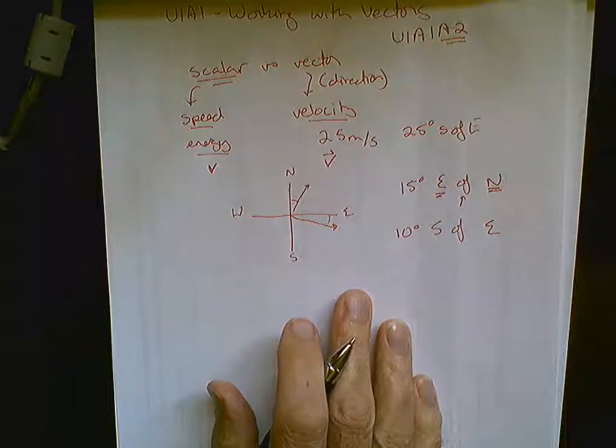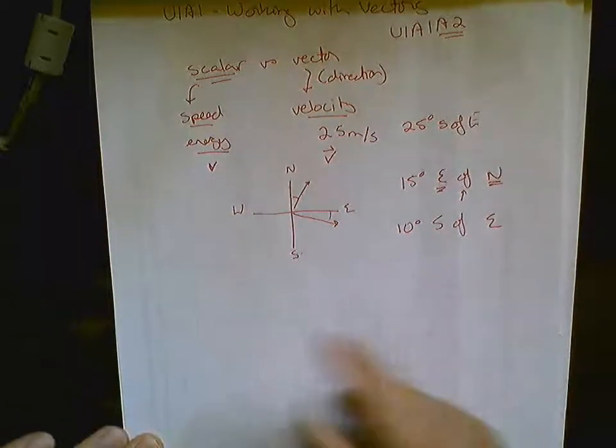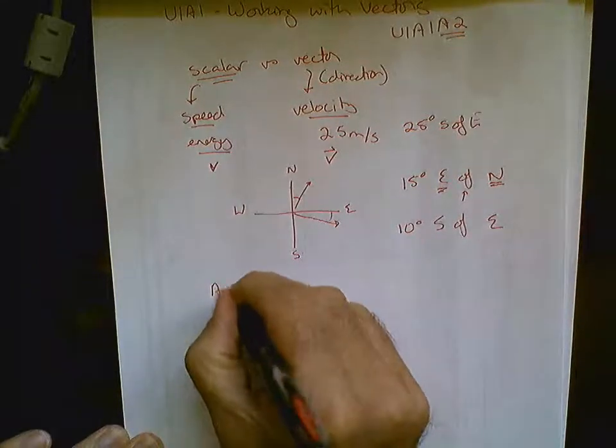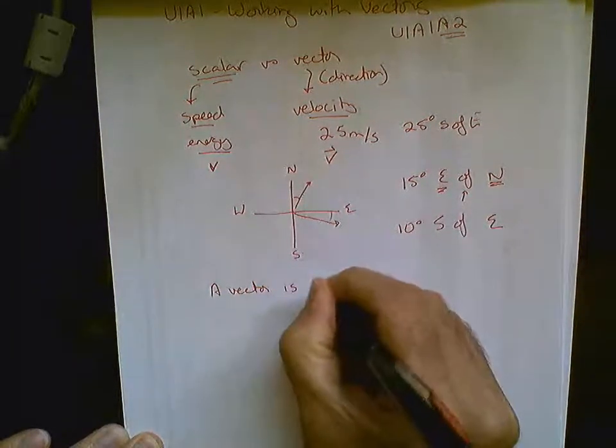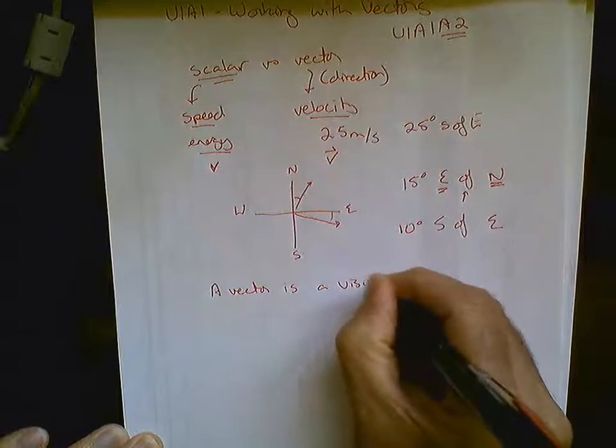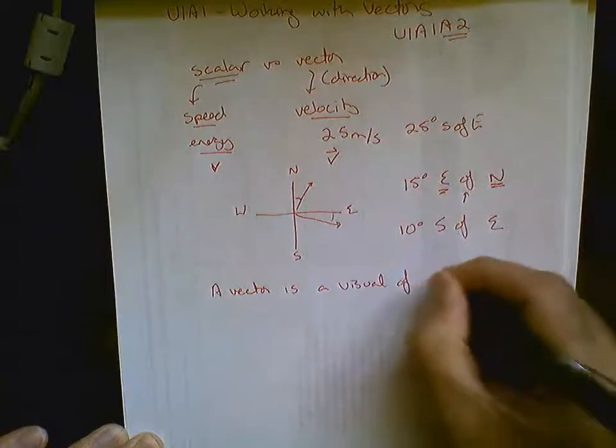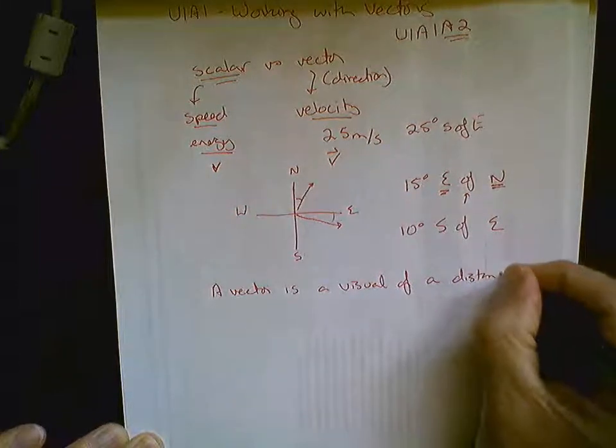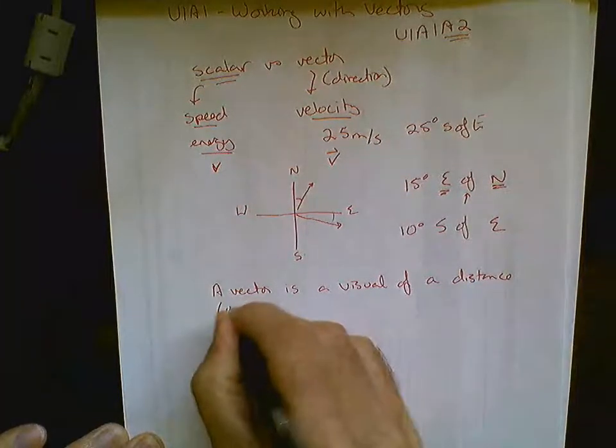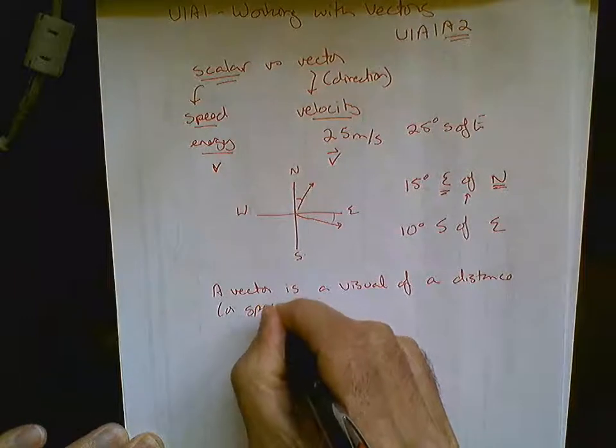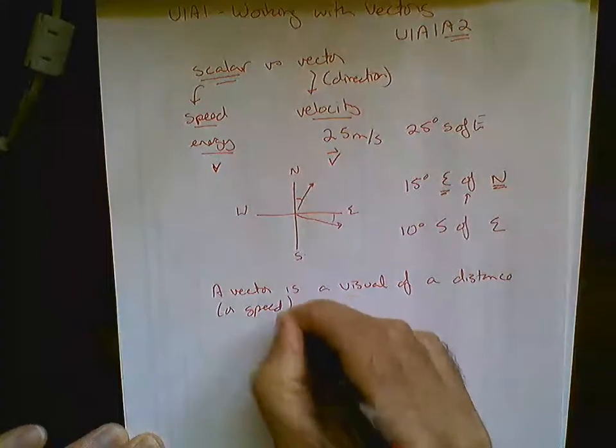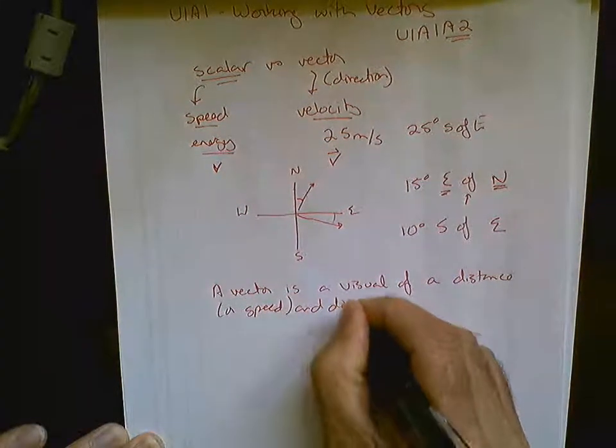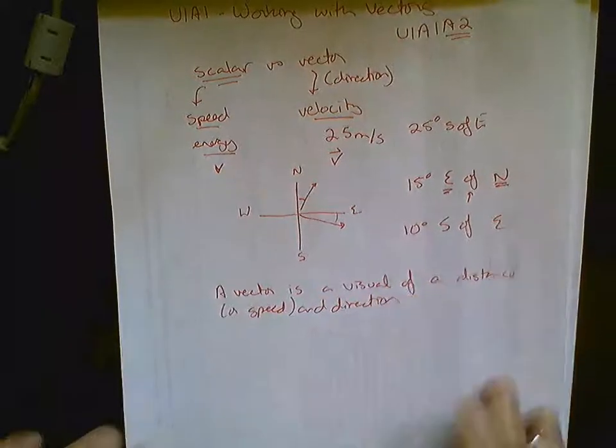Next thing. What is a vector? A vector is a visual of a distance or speed and direction.